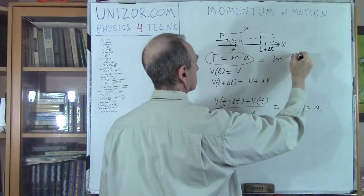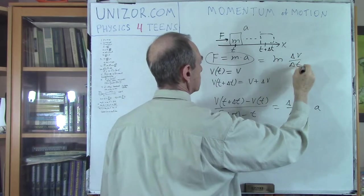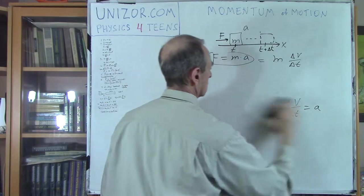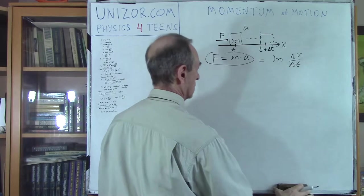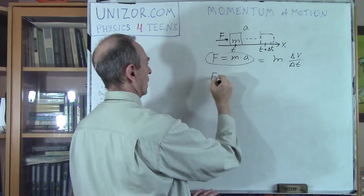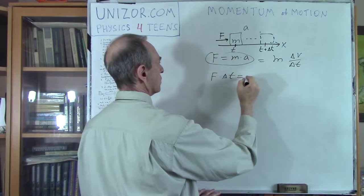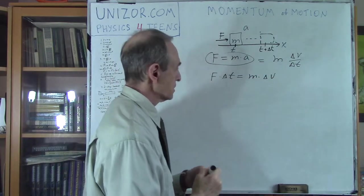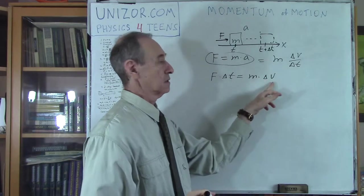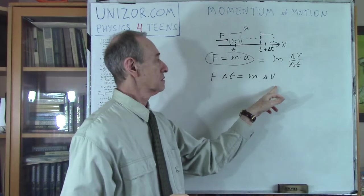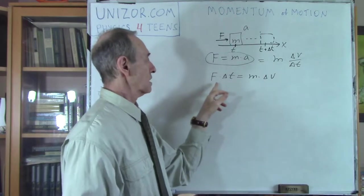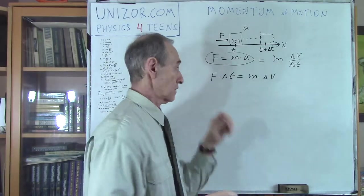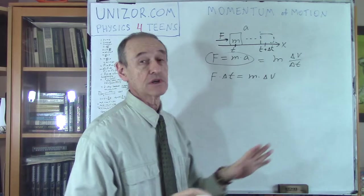What do we have from here if we use this? This would be M delta V divided by delta T. Or F times delta T equals M times delta V. Increment of speed times mass equals increment of time times force. This is a very interesting equation with far-reaching consequences.